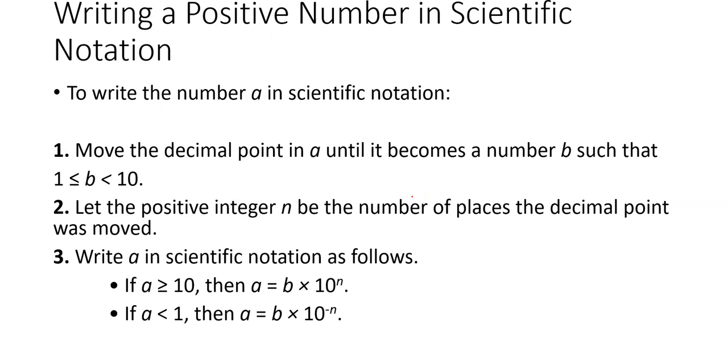So how does this work? You're going to move the decimal point until it becomes a number between 1 and 10. For example, if you were trying to write 748 as a power of 10, you would write it as 7.48 times 10 to the second. You would move that decimal point until the number before the times sign is between 1 and 10. You wouldn't write it as 74.8, you would write it as 7.48. That positive integer n is the number of decimal points, and then you have to decide whether to move it right or left.